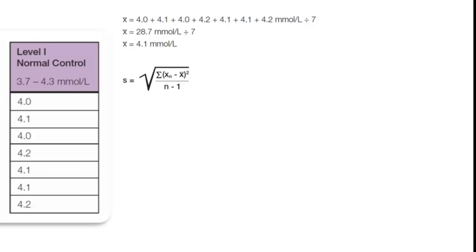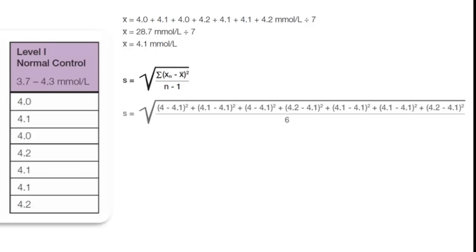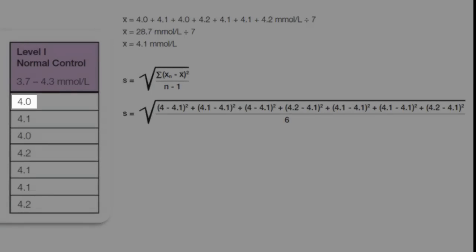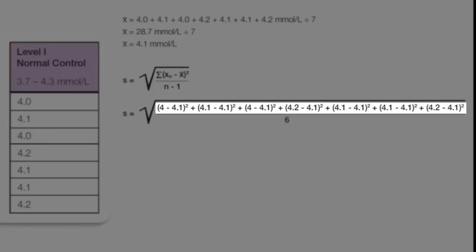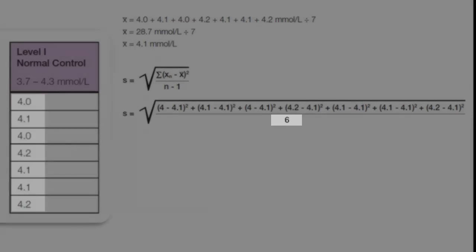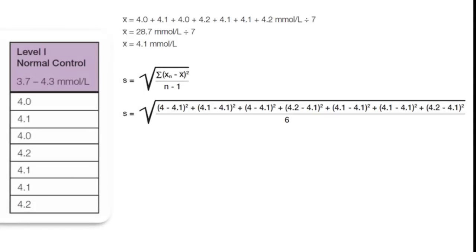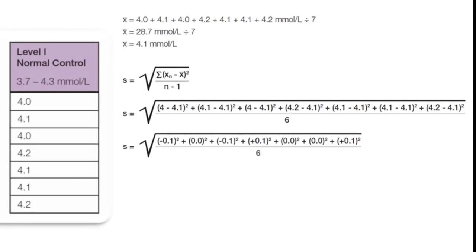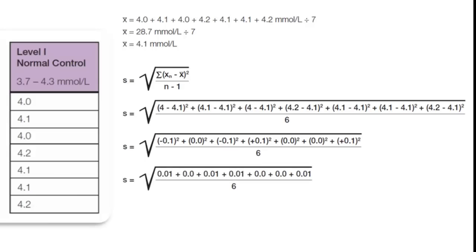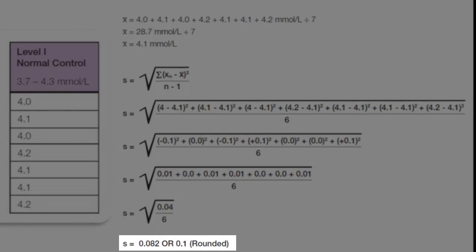First, enter the values into the formula. The value to the left of the minus sign comes from the dataset, and the value to the right of the minus sign is the mean that was just calculated. This pattern repeats for all of the points in the dataset. The divisor is the number of data points in the dataset minus 1. The subtraction is done within the brackets, the values are squared, and then added. Finally, the division occurs and the square root is taken. The standard deviation for one week of testing of the normal potassium control level is 0.082 millimole per liter.